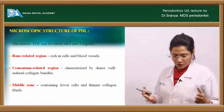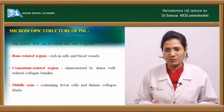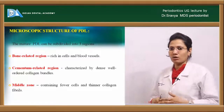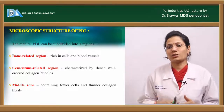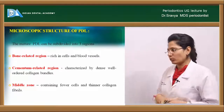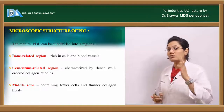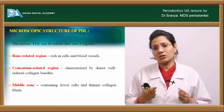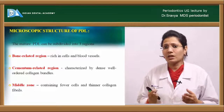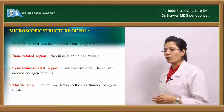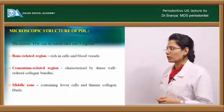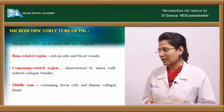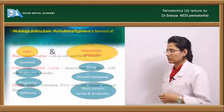When visualized under the microscope, the PDL can be divided into three zones: the zone related to the bone, the zone related to the cementum, and the middle zone. The zone related to the bone is very rich in blood vessels, whereas the zone related to the cementum is very rich in fibers or collagen bundles. The middle zone contains fewer cells and has thinner collagen fibrils.